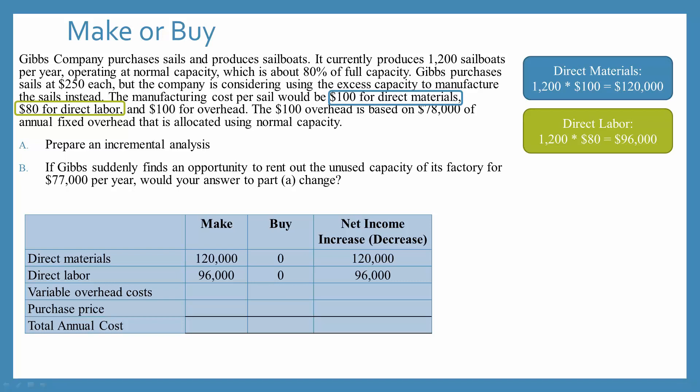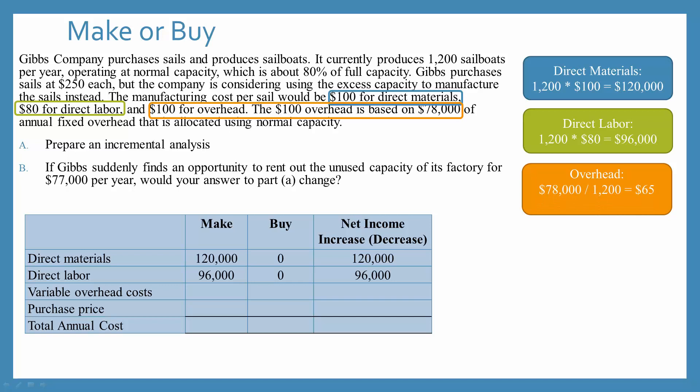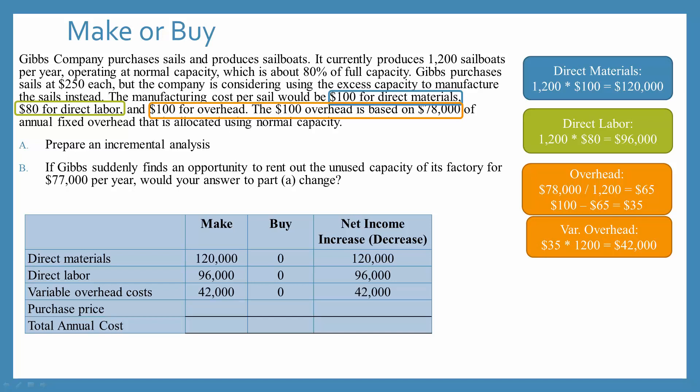Now we need to look at our overhead. The paragraph tells us that the cost for overhead is $100. However, it also tells us that the overhead is based on $78,000 of annual fixed overhead. Since the fixed overhead needs to be paid whether they make or buy, that is not factored into our decision-making process. So we take the $78,000 of fixed overhead, divide it by the 1,200 sailboats to determine that our fixed overhead cost per unit is $65. If my total overhead is $100 and the fixed is $65, then the variable cost per unit is $35 for overhead. Now we can take that cost and multiply it by our number of sails to determine that if they choose to make, the total variable overhead cost would be $42,000.